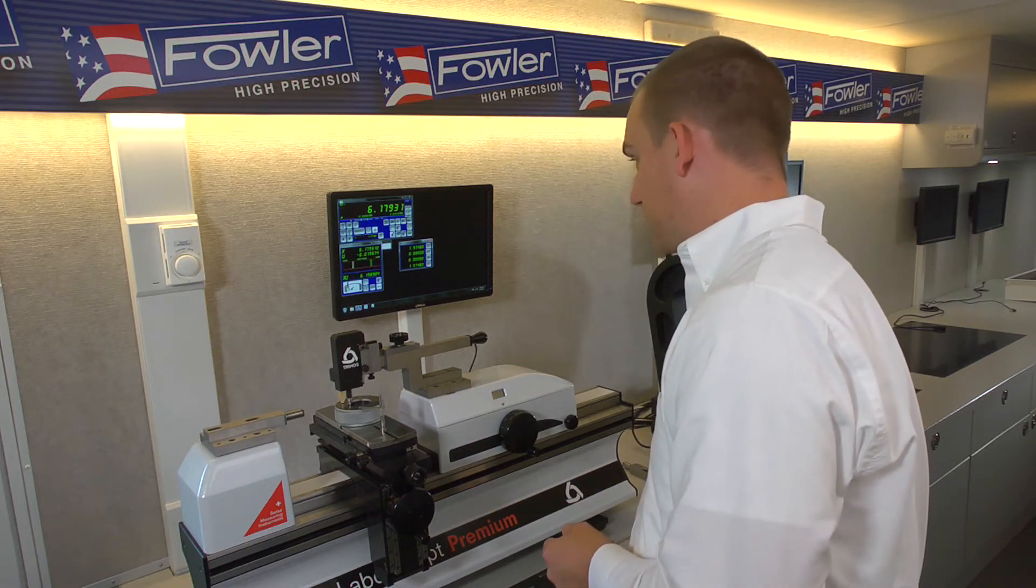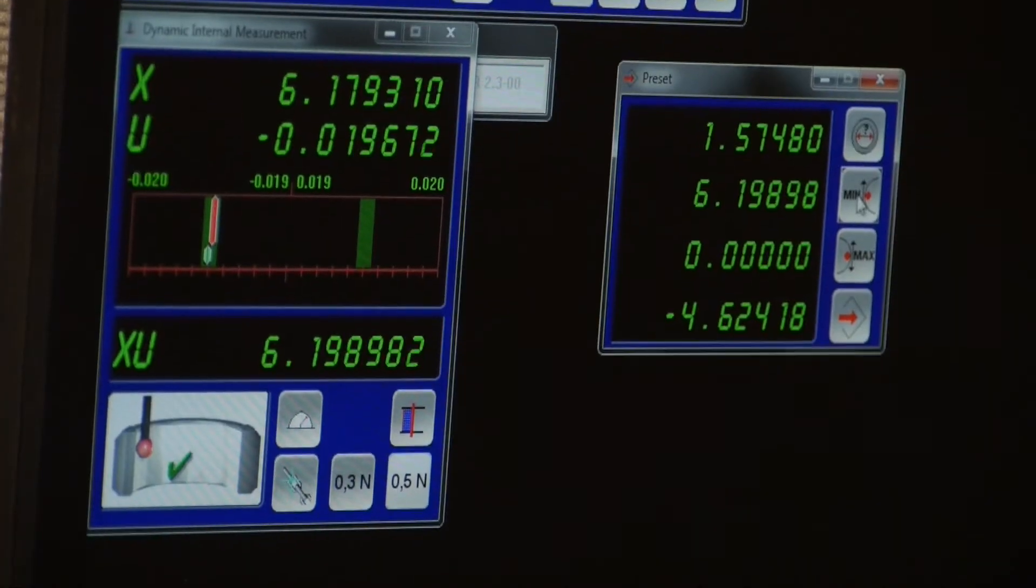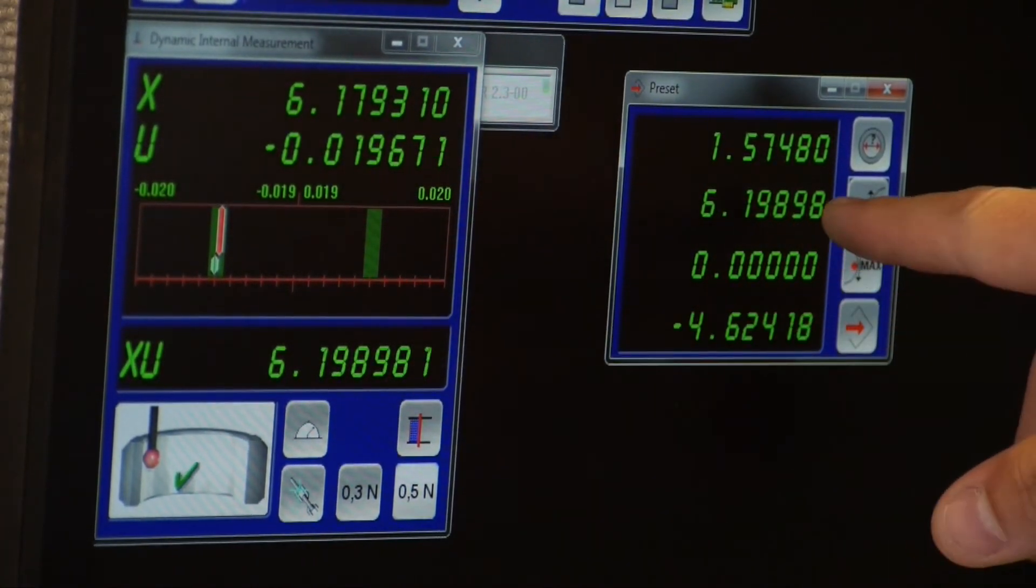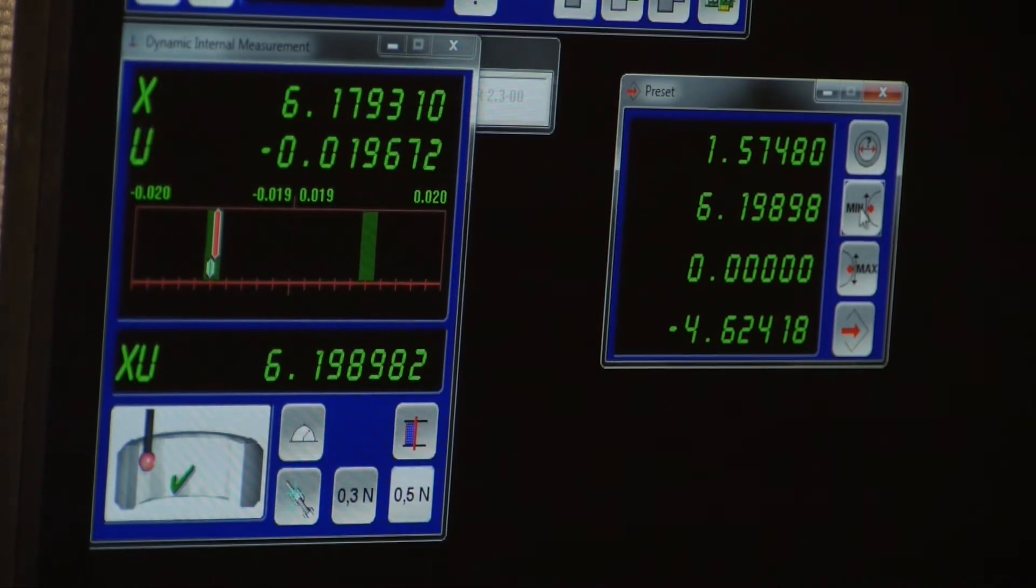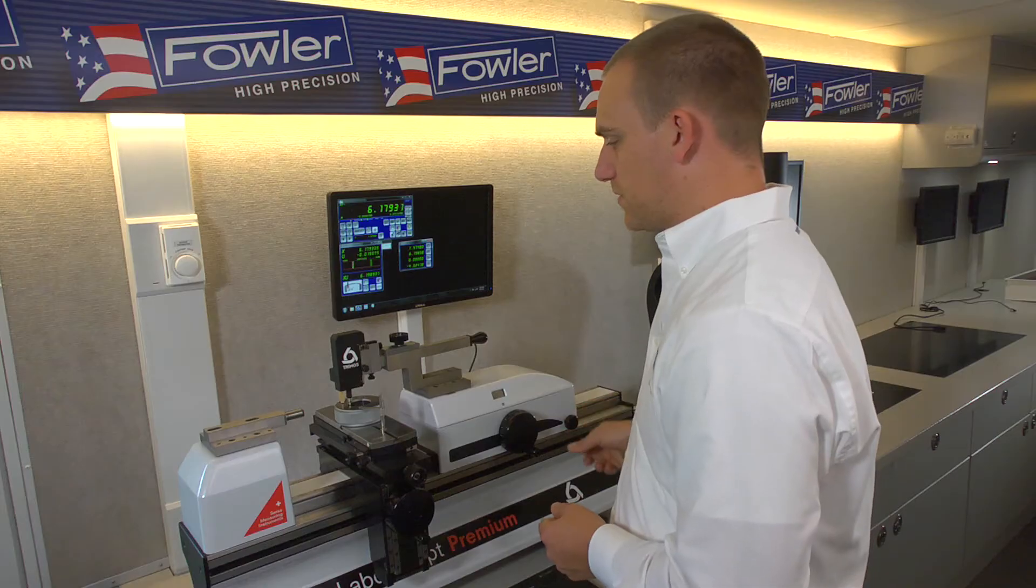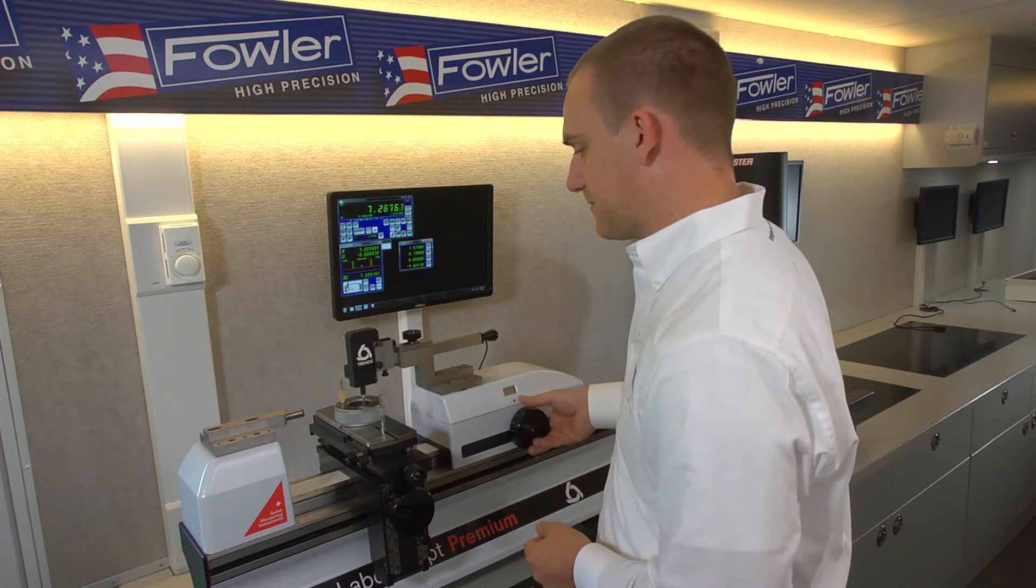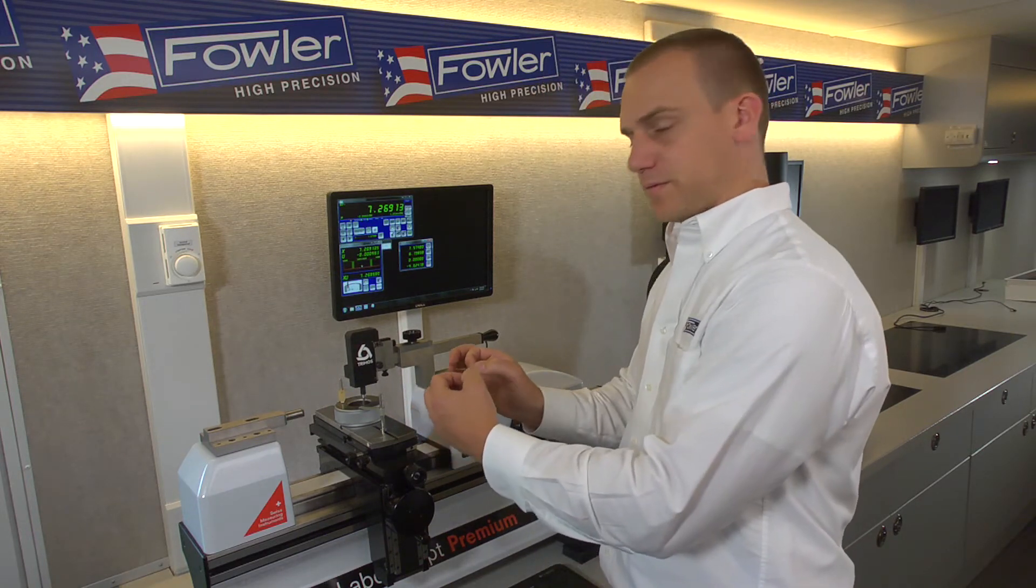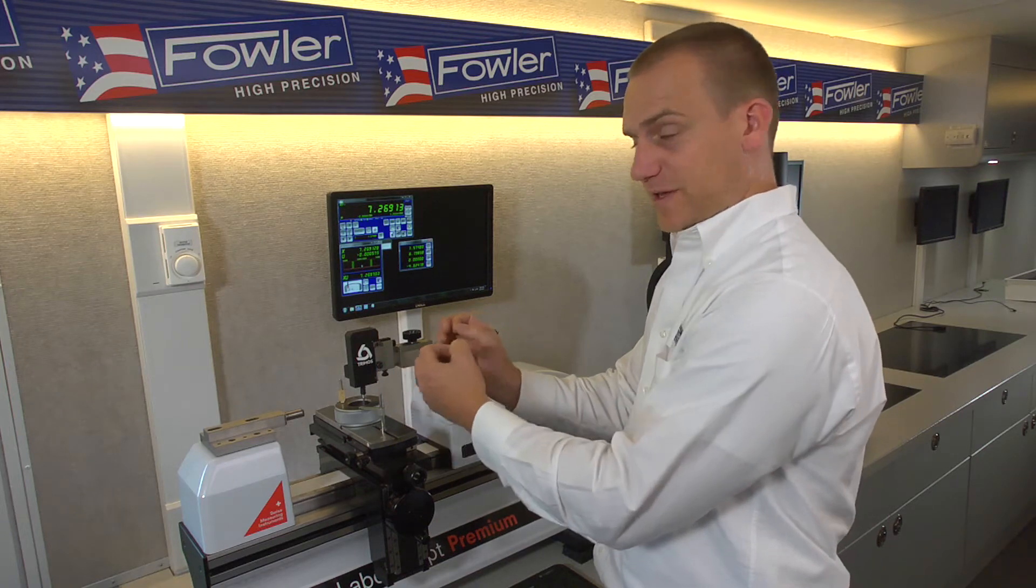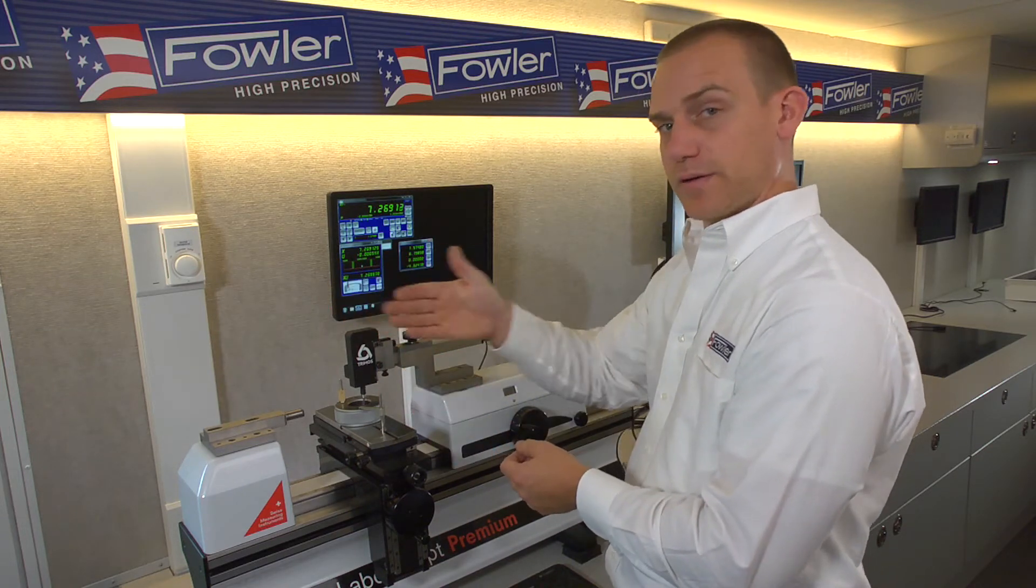We'll use the next row down on the wizard here, use the min. So that takes our current XU position and drops it there. Since this is a single ball probe, we don't have to do a sweep on the right side. A two ball probe, we can't guarantee that it's perfectly in line. So it's good practice to sweep on both sides.